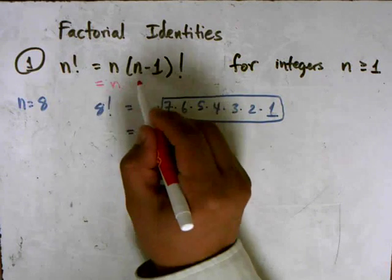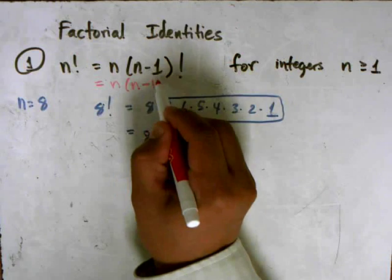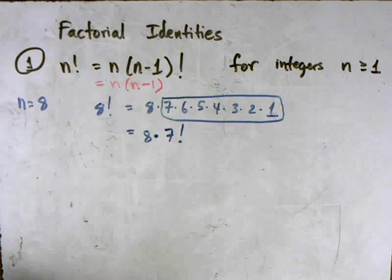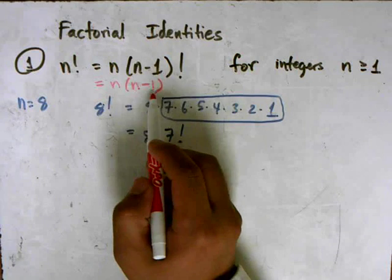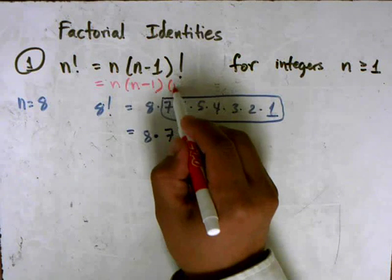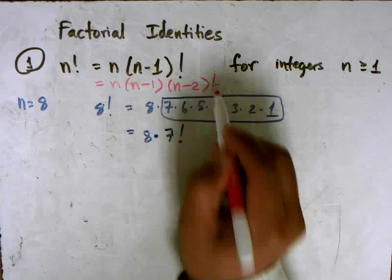So I have n, n minus 1 factorial. But n minus 1 factorial can also be described as n minus 1 times n minus 2 factorial.